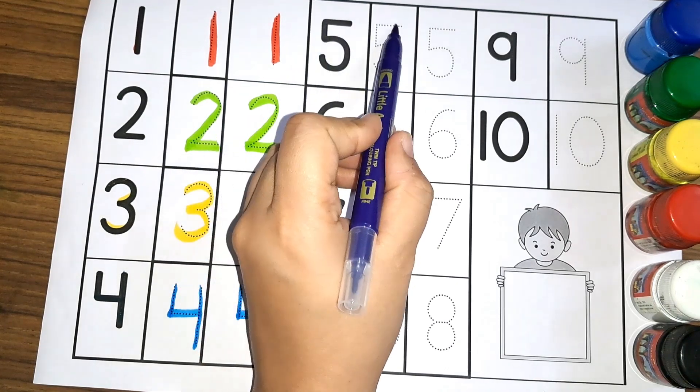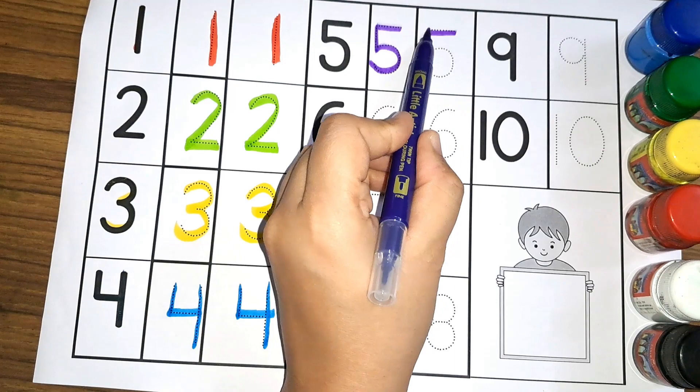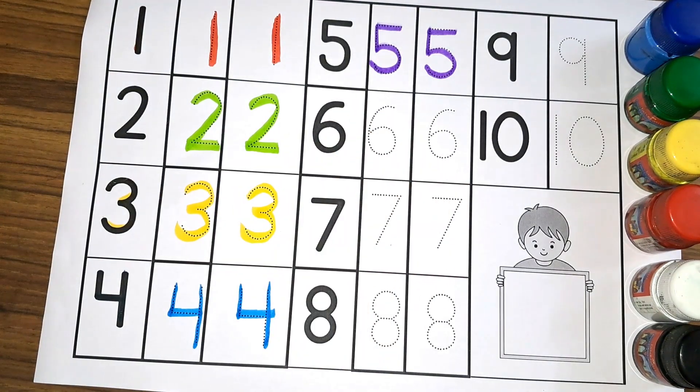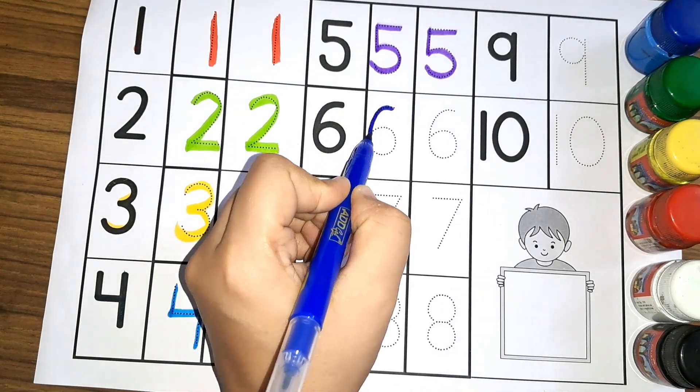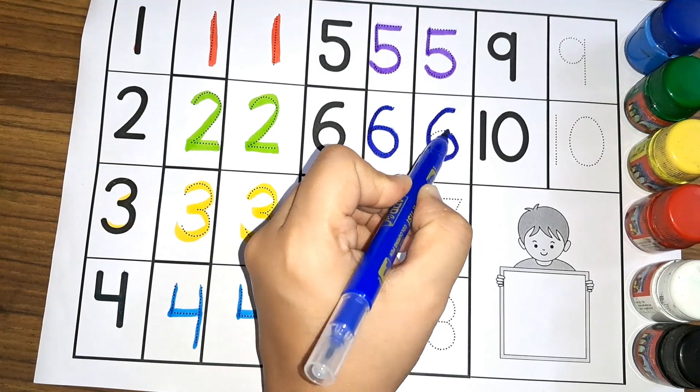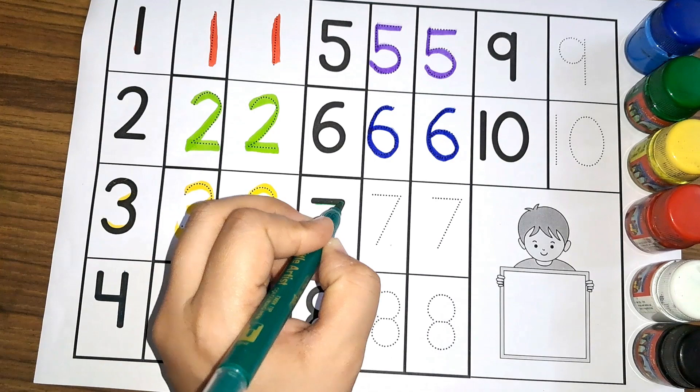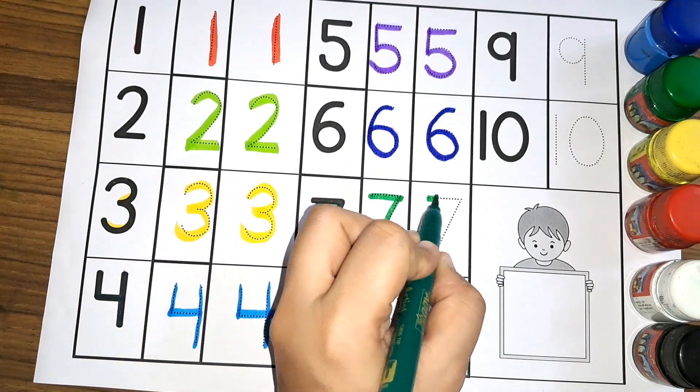Number five, number five. We have number six, number six, number six. Then there is number seven, number seven, number seven.